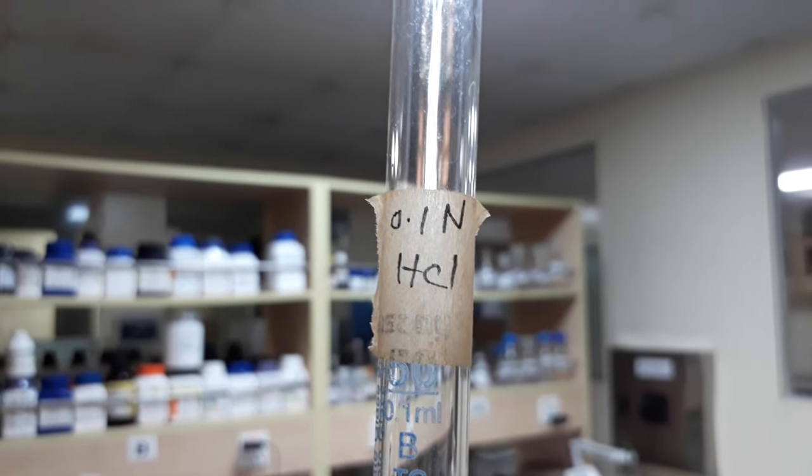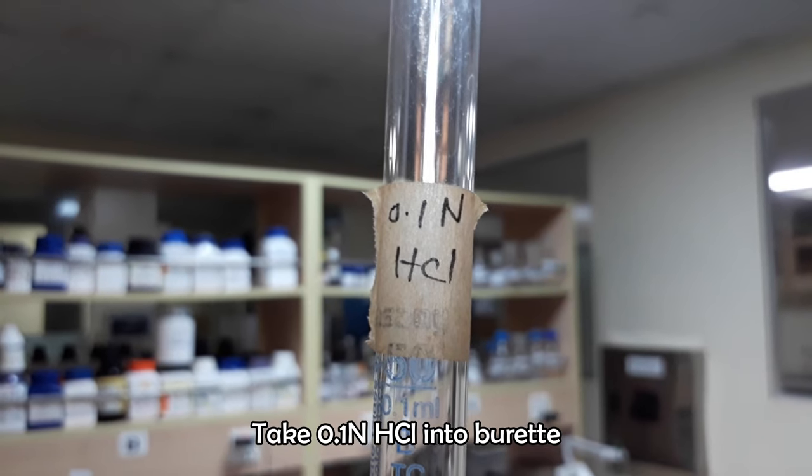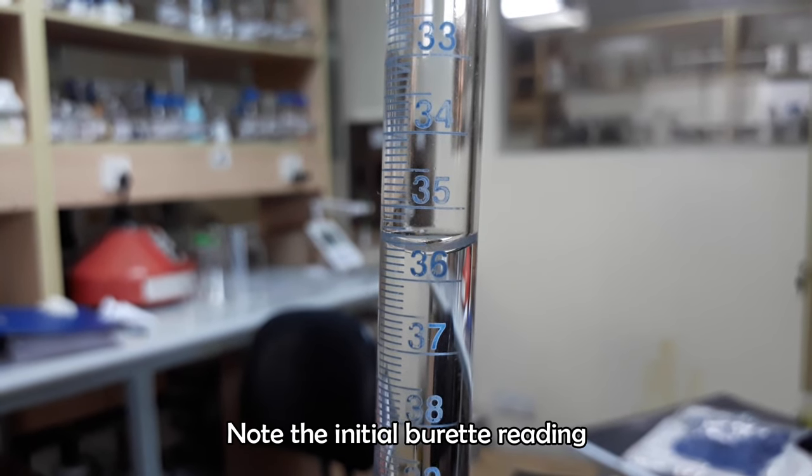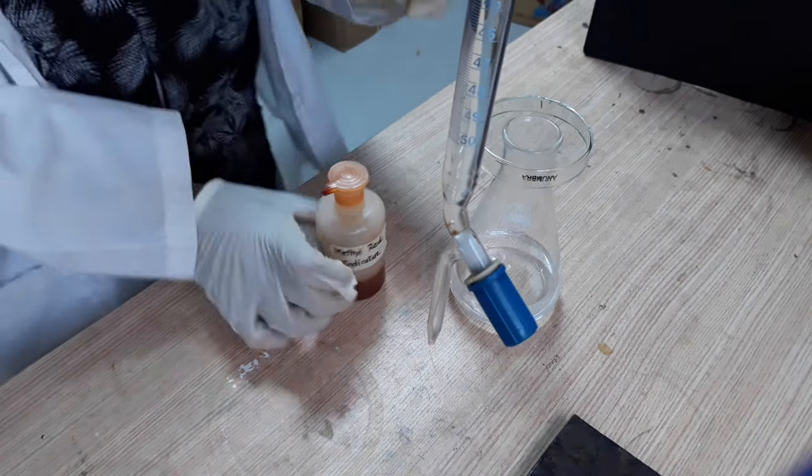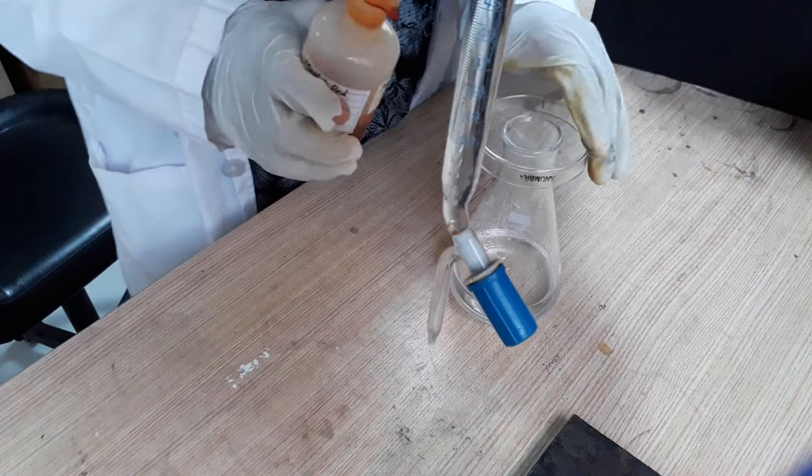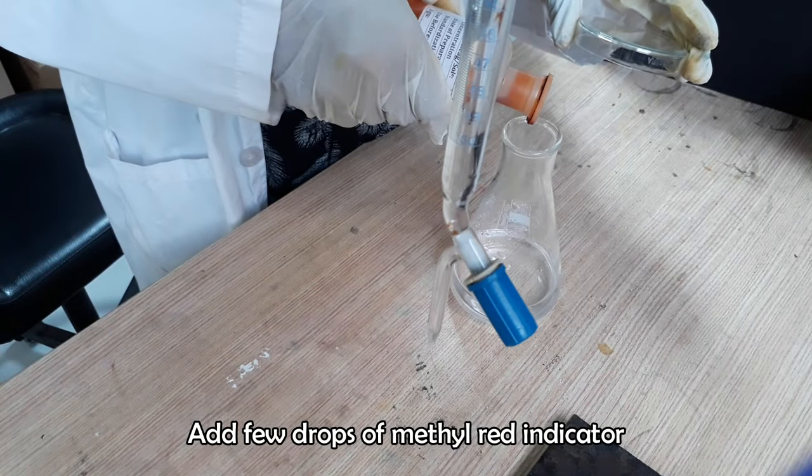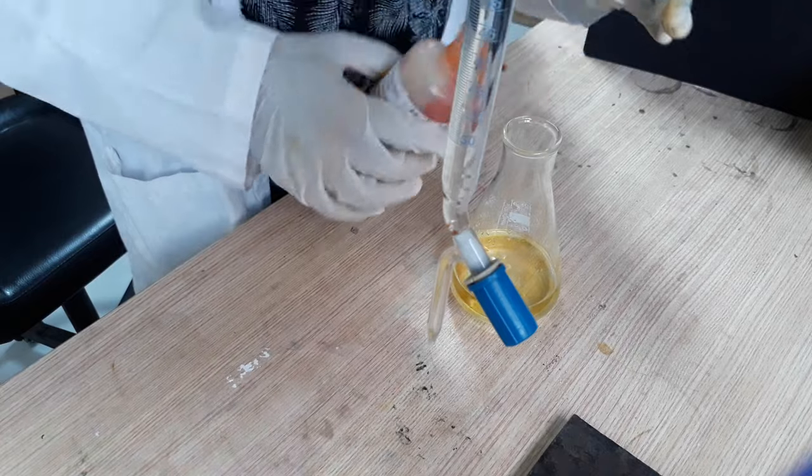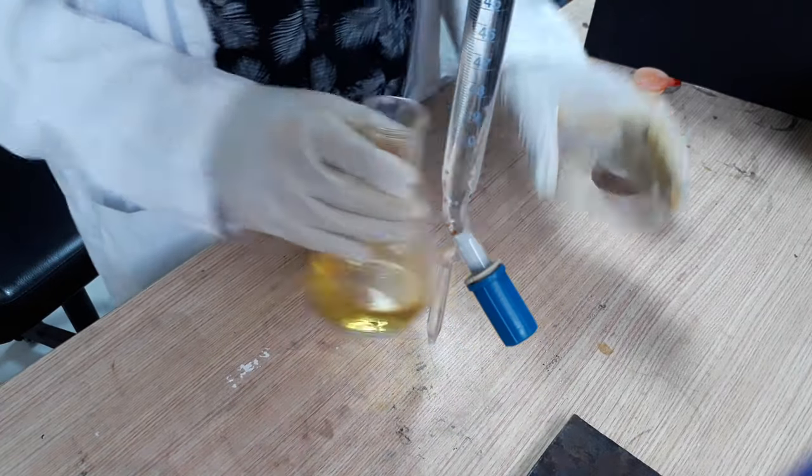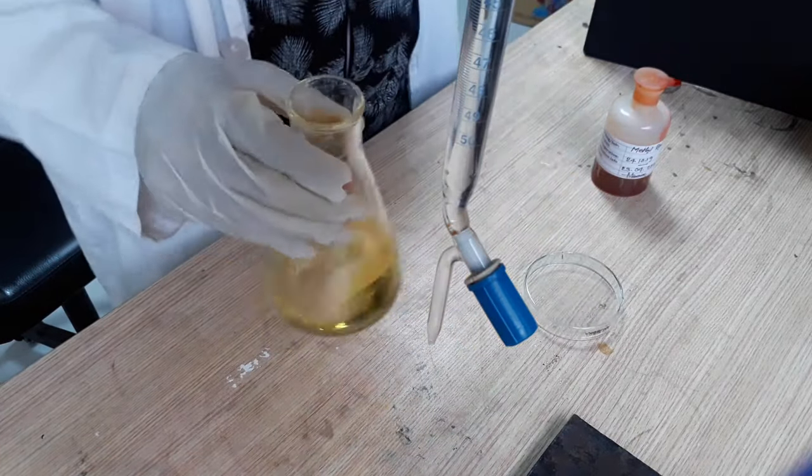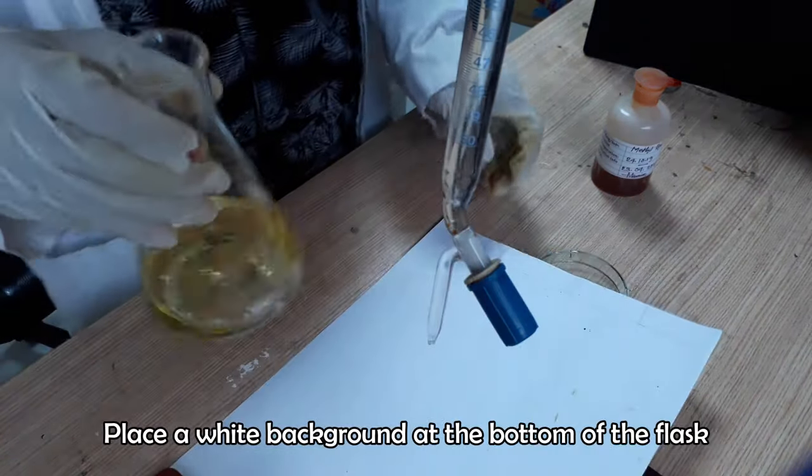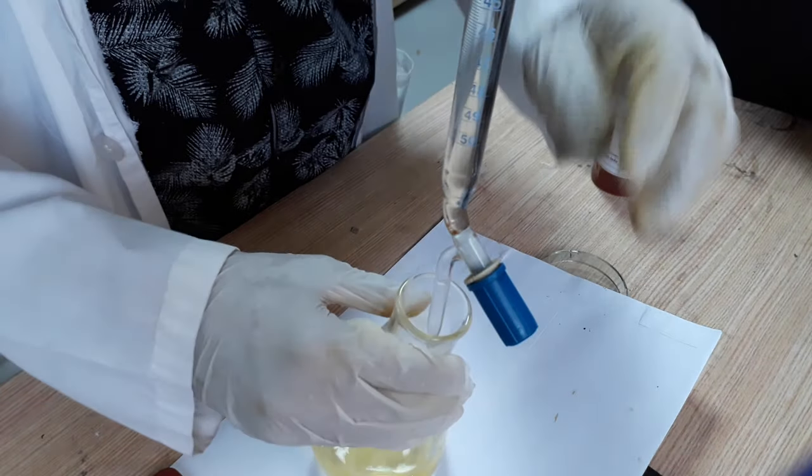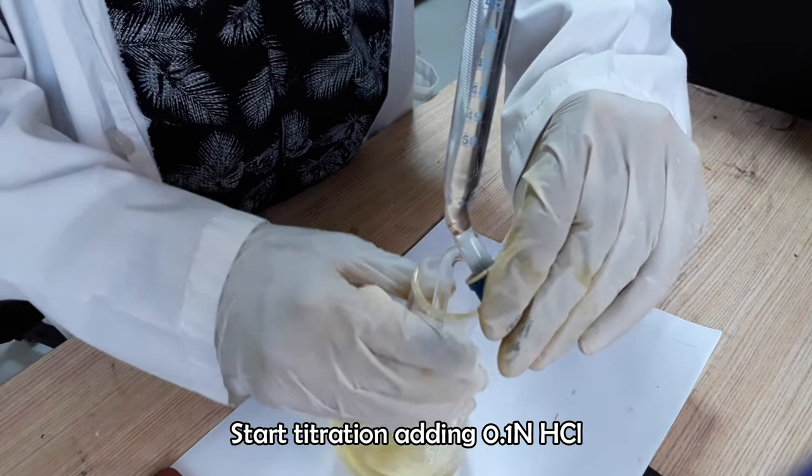Now it's time to do the titration. Take 0.1 normal of standardized hydrochloric acid in burette. Note the initial burette reading. Add few drops of methyl red indicator solution to the conical flask that contains the collected distillate. The color of the distillate will be changed from transparent to yellow. Titrate the distillate with 0.1 normal hydrochloric acid.